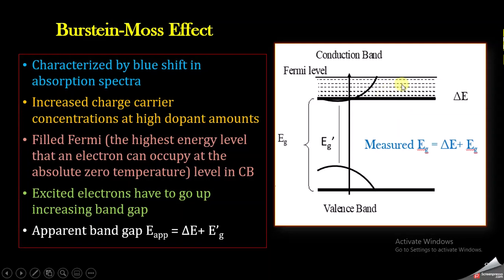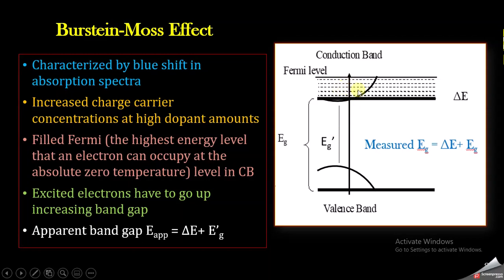As you increase the charge carrier concentration by increasing the dopant amount, the Fermi level fills up and there is no space for more charge carriers. When you further increase the dopant concentration, these charge carriers have to move higher up, increasing the apparent band gap. The apparent band gap becomes equal to ΔE plus Eg', so the band gap increases because electrons have no space in the lower positions and must go higher.